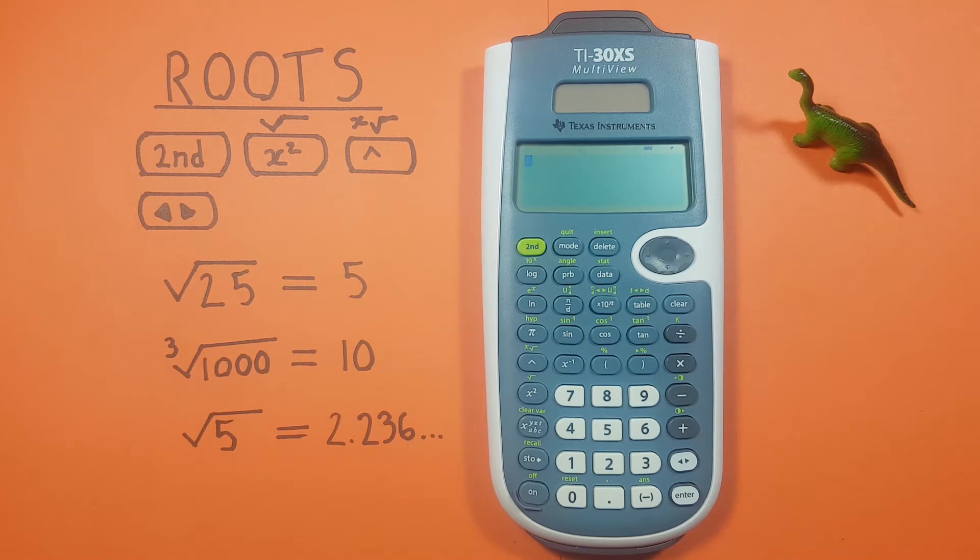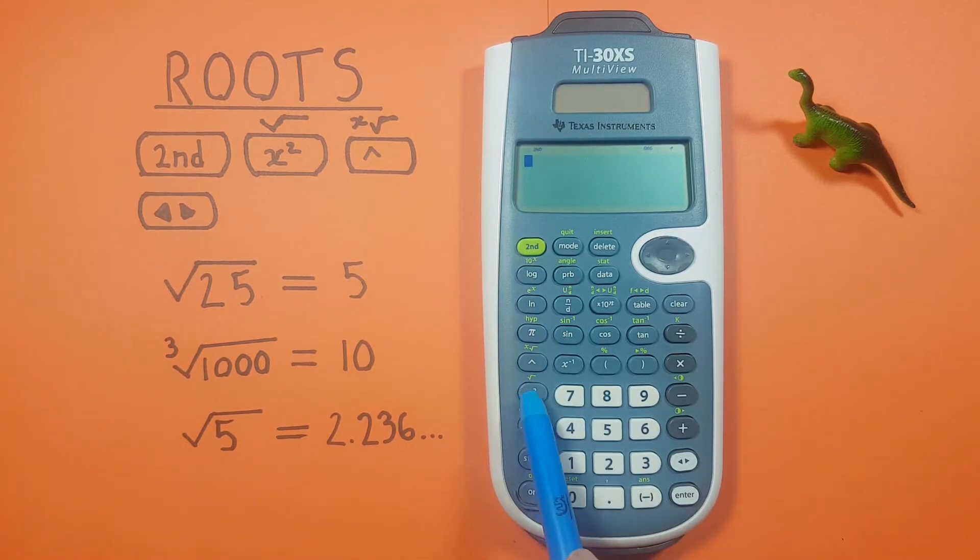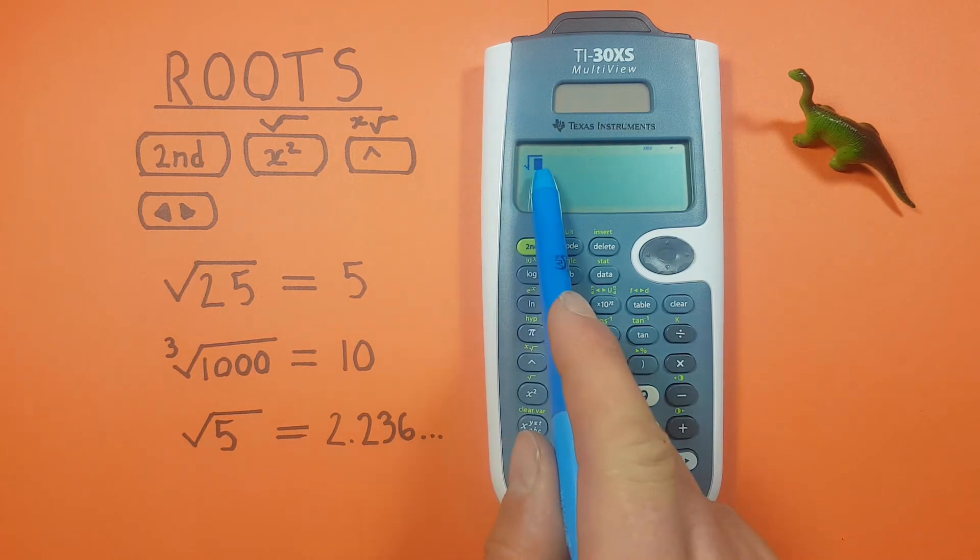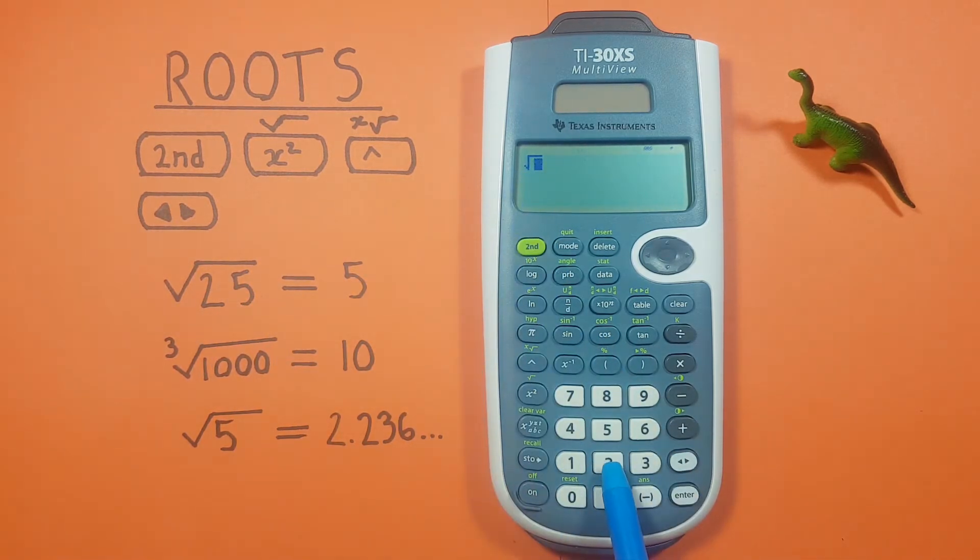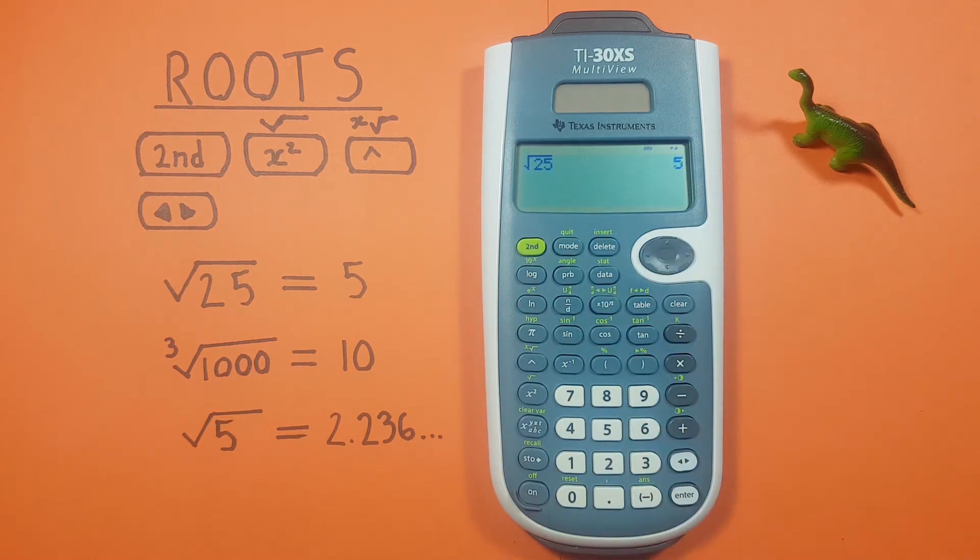If we just want to square root a number like say find the square root of 25, we can start by entering the square root on the screen with the second function and then the x squared. There's our square root there, and then we enter in what's underneath, so that's 25, and press enter and see we get square root of 25 is equal to 5.